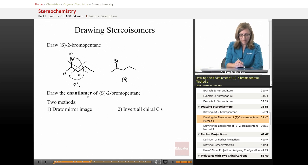Now what if I asked you to draw the enantiomer of S-2-bromopentane? And we already see what the structure of the S enantiomer looks like. And if I wanted to draw the other enantiomer, there's two methods. There's two approaches we can take to this problem.